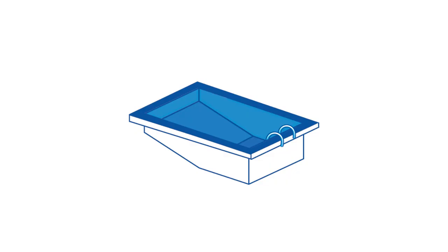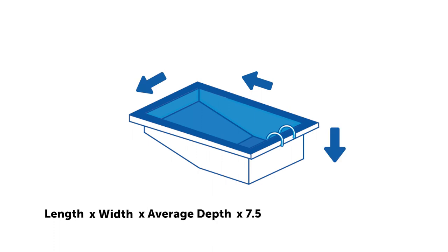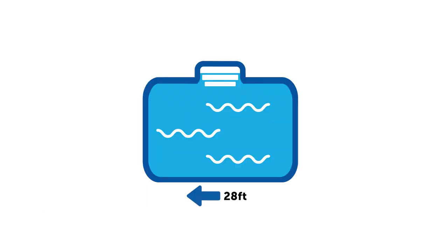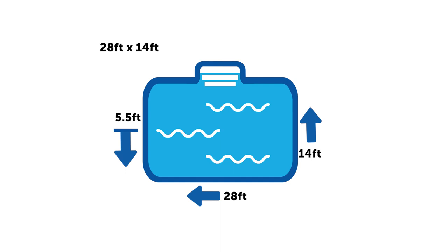For rectangular or square pools, you multiply the length by width by average depth by 7.5 to get your approximate volume. So for example, if your pool is 28 feet long, 14 feet wide, and has an average depth of 5.5 feet, you'll multiply 28 times 14 times 5.5 times 7.5, which gives you an approximate pool volume of 16,000 gallons.